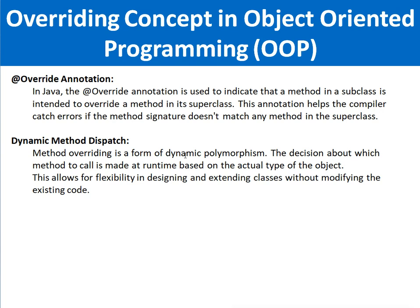Method overriding is a form of dynamic polymorphism. The decision about which method to call is made at runtime based on the actual type of the object. This allows for flexibility in designing and extending classes without modifying the existing code.